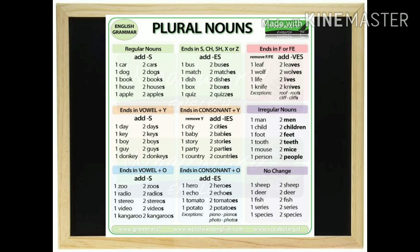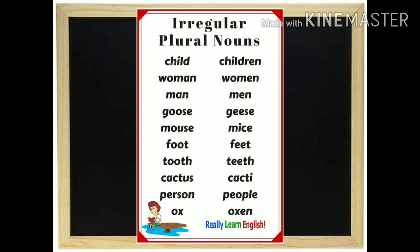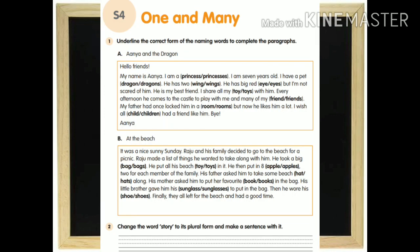So these are the rules for singular and plural forms: regular nouns take S; words ending with CH, S, Z, X take ES. But some words change their spellings entirely and do not take the same ending. For example: child, children; woman, women; man, men; goose, geese; mouse, mice — these are irregular plurals.